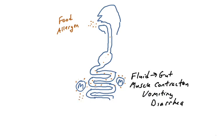If that occurs, then you're going to get mast cell degranulation in the circulatory system. So the localized effect would involve fluid movement into the circulatory system, contraction of the smooth muscles, and this would lead to vomiting and diarrhea.